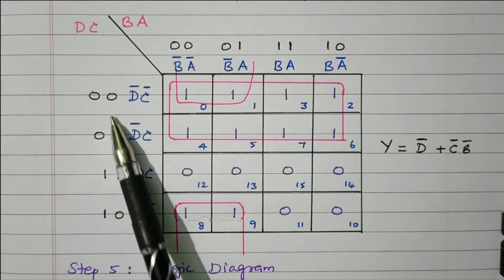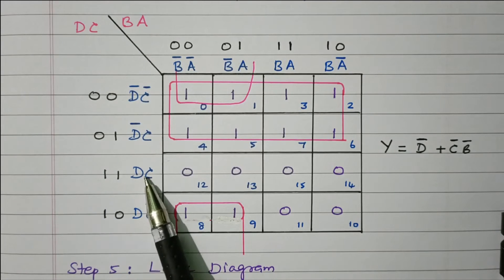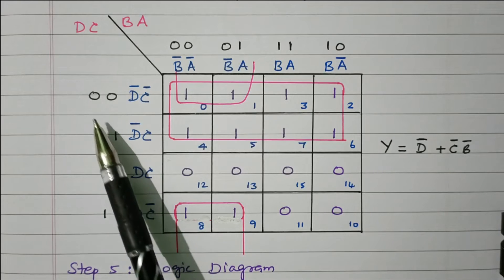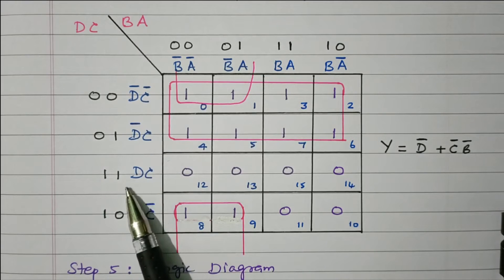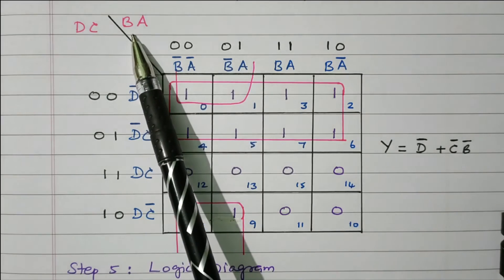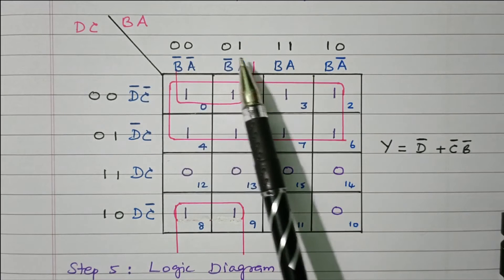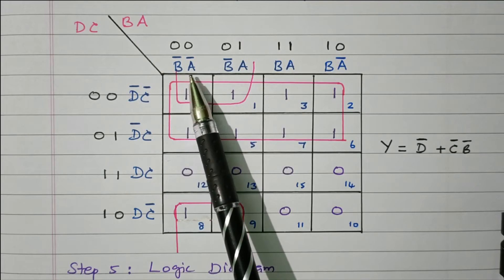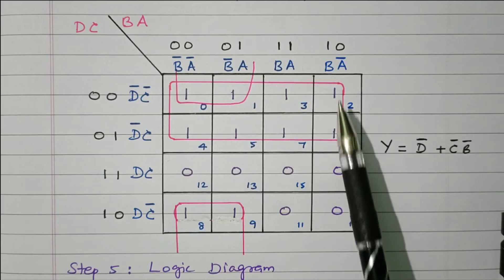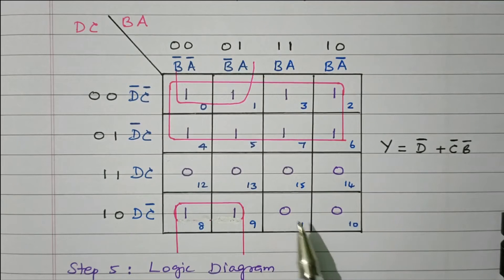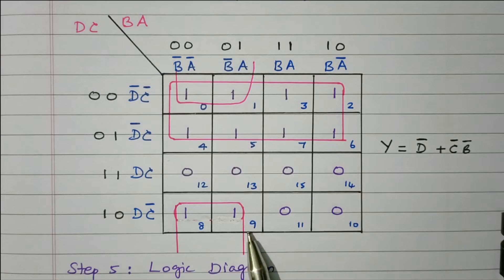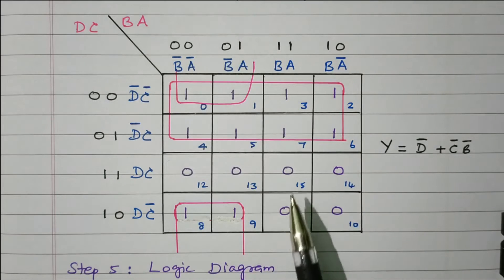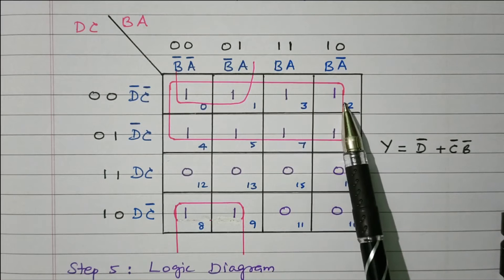The DC rows follow Gray code: 00 (D̄C̄), 01 (D̄C), 11 (DC), 10 (DC̄). The BA columns follow: 00 (B̄Ā), 01 (B̄A), 11 (BA), 10 (BĀ) — note the interchange between the 3rd and 4th columns. The minterms 0 through 9 are placed as 1s (valid states), and minterms 10 through 15 are placed as 0s (invalid states). Totally 10 ones and 6 zeros in the K-map.